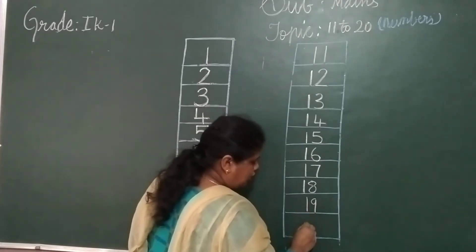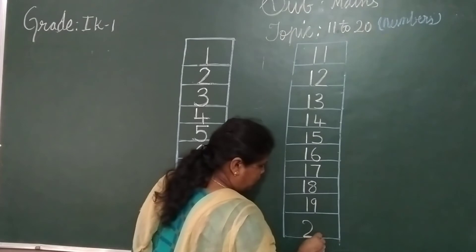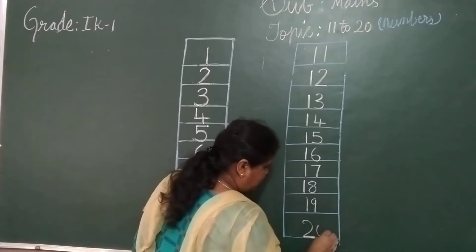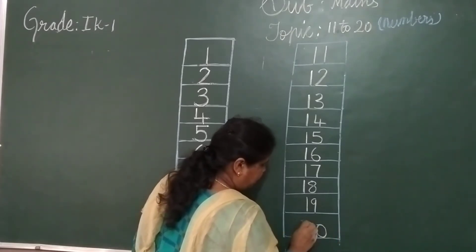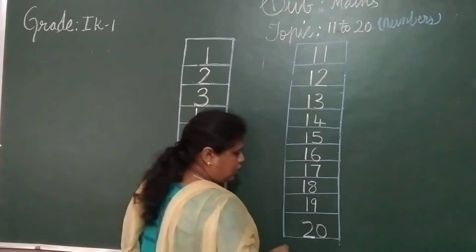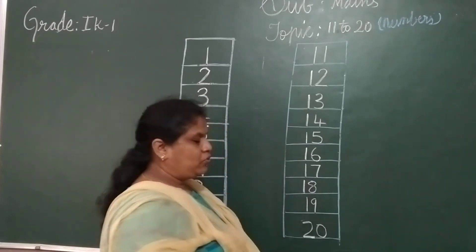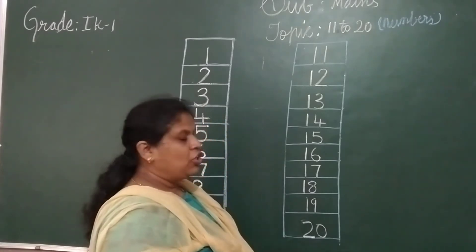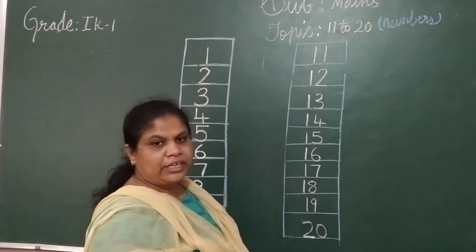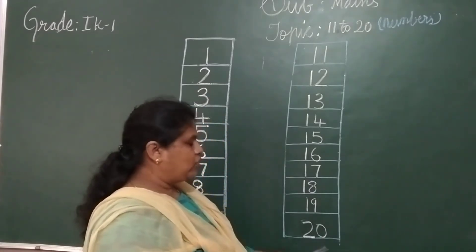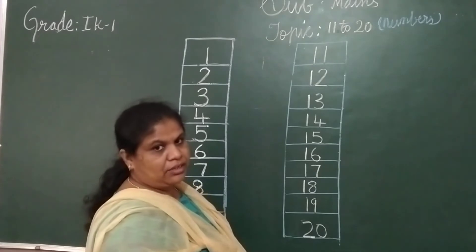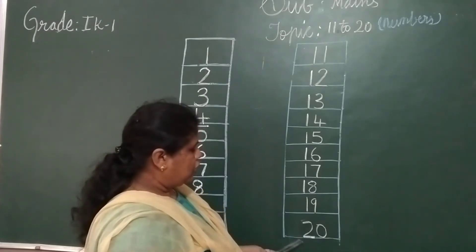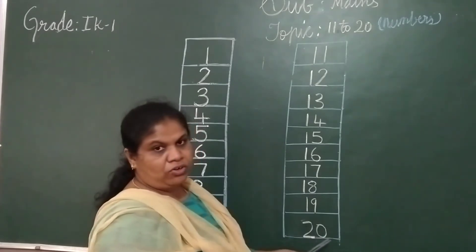See? 20. 20. Two, zero — 20. Two, zero — 20. Okay? Two, zero — 20.